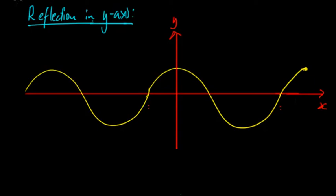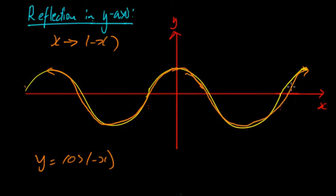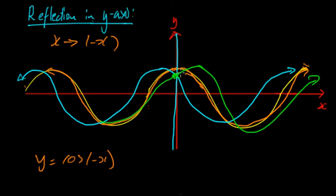For a reflection in the y-axis of the cosine graph, we replace x with negative x to get y = cos(-x). What does this look like? Well, the basic cosine graph is actually symmetrical about the y-axis, so reflecting in the y-axis gives the exact same graph. However, that's not always the case once you add translations. If the cosine graph has been shifted along, you need to actually reflect it in the y-axis — the reflected graph will look different, starting from a different position.